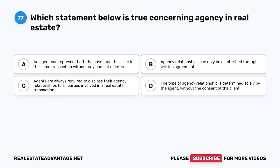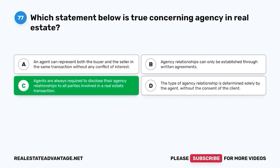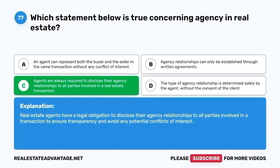Question 77. Which statement below is true concerning agency and real estate? A. An agent can represent both the buyer and the seller in the same transaction without any conflict of interest. B. Agency relationships can only be established through written agreements. C. Agents are always required to disclose their agency relationships to all parties involved in a real estate transaction. D. The type of agency relationship is determined solely by the agent without the consent of the client. The correct answer is C. Real estate agents have a legal obligation to disclose their agency relationships to all parties involved in a transaction, to ensure transparency and avoid potential conflicts of interest.